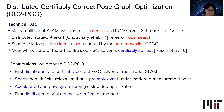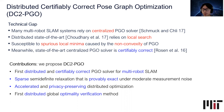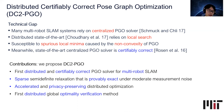DC2PGO is based on a sparse semi-definite relaxation that is proven to be exact under moderate measurement noise. Exactness means that by solving this semi-definite relaxation, we are guaranteed to recover global minimizers to the original PGO problem. In terms of algorithm, we propose an accelerated and privacy-preserving distributed optimization technique, as well as the first distributed global optimality verification method.